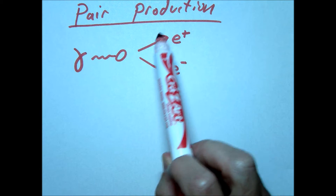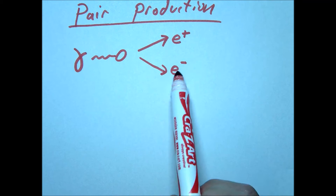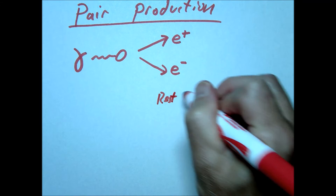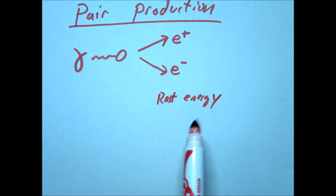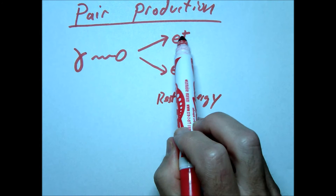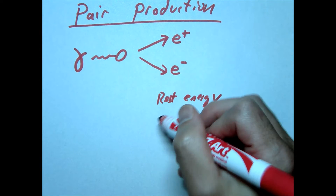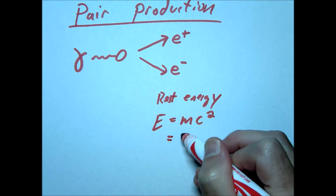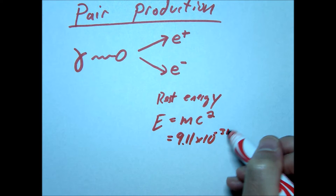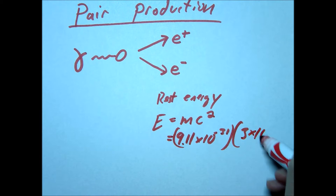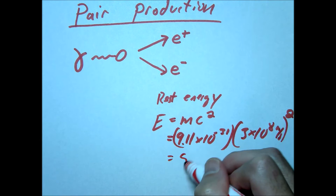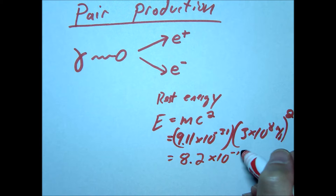The mass of the positron and the mass of the electron are the same — they're equal to each other. We have something called rest energy, which is essentially how much energy we'd get if we converted all the mass of an electron. For this, we use Einstein's equation E equals mc squared. The mass of an electron is 9.11 times 10 to the negative 31st, and the speed of light is 3 times 10 to the 8th. When we calculate that, we get about 8.2 times 10 to the negative 14 joules.